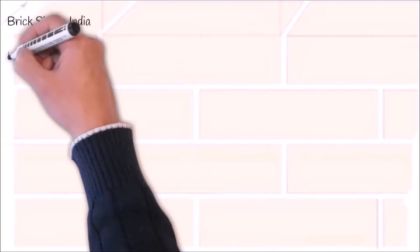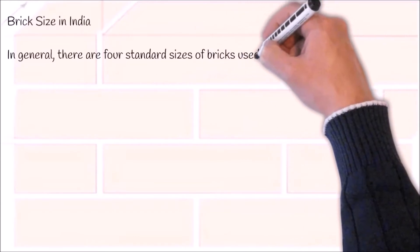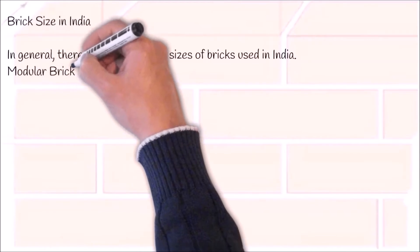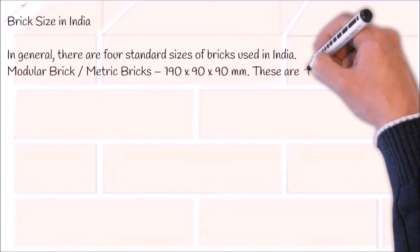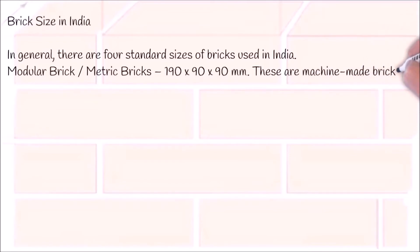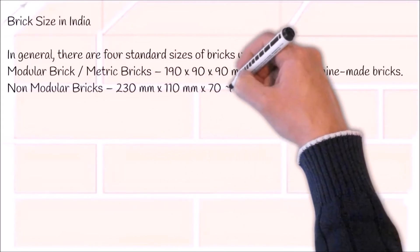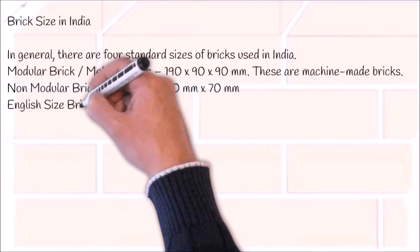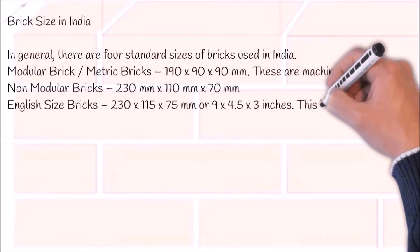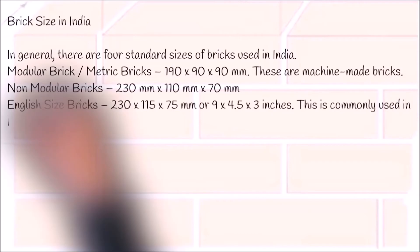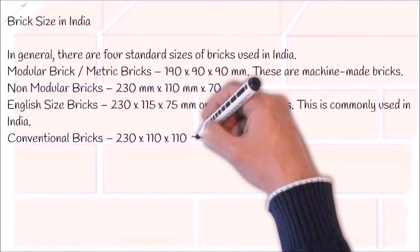Brick size in India. In general, there are four standard sizes of bricks used in India. First is modular brick — metric bricks of size 190 x 90 mm. These are machine-made bricks. Second is non-modular bricks of size 230 mm x 110 mm x 70 mm. Third is English size bricks of size 230 x 115 x 75 mm, or 9 inches x 4.5 inches x 3 inches. This is commonly used in India.